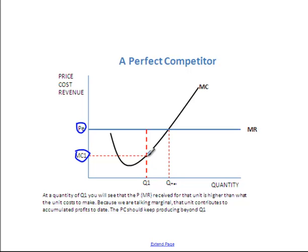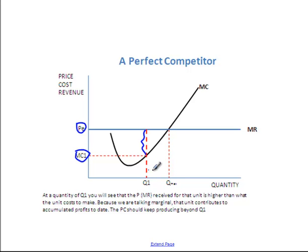So for that unit, the perfect competitor receives a price of PE and has a cost of making the unit of MC1. Therefore, the gap between the price and the cost of making that particular unit is the marginal profit of making that unit. Marginal profit means the profit made on that unit, which gets accumulated on top of all the profit made for previous units. Importantly, there are also units between Q1 and Q max that will also contribute to profit.